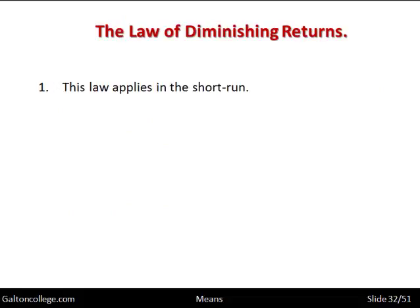Now, the law of diminishing returns applies in the short run. In economics, the short run has a particular meaning: it is when some factors of production are fixed in supply. So if a company has a factory unit, that factory unit is fixed in size, meaning the company must be working in the short run.